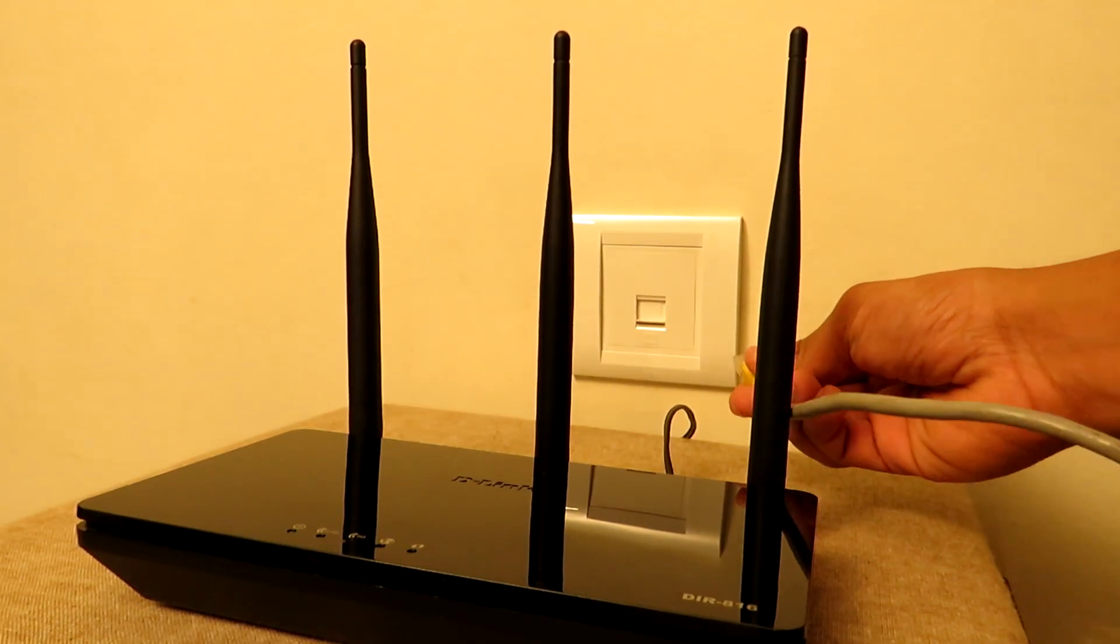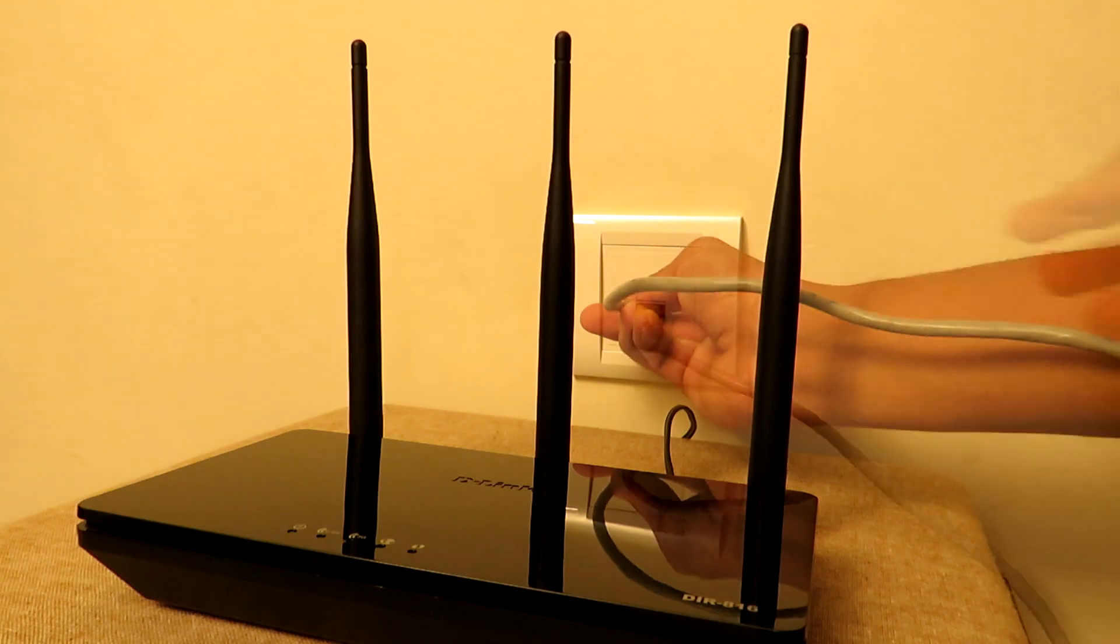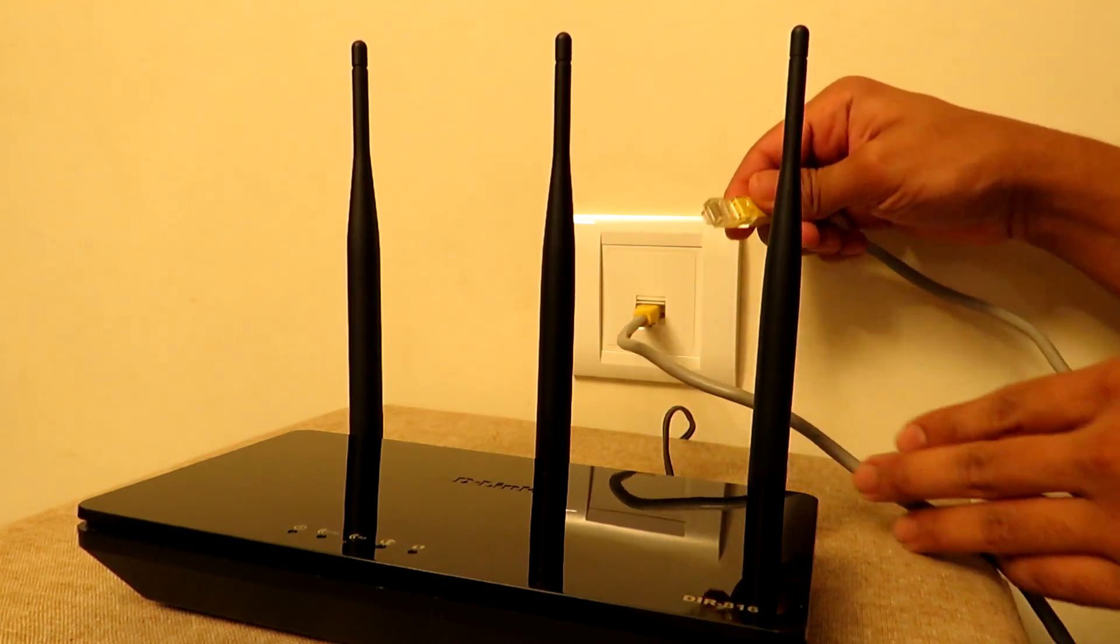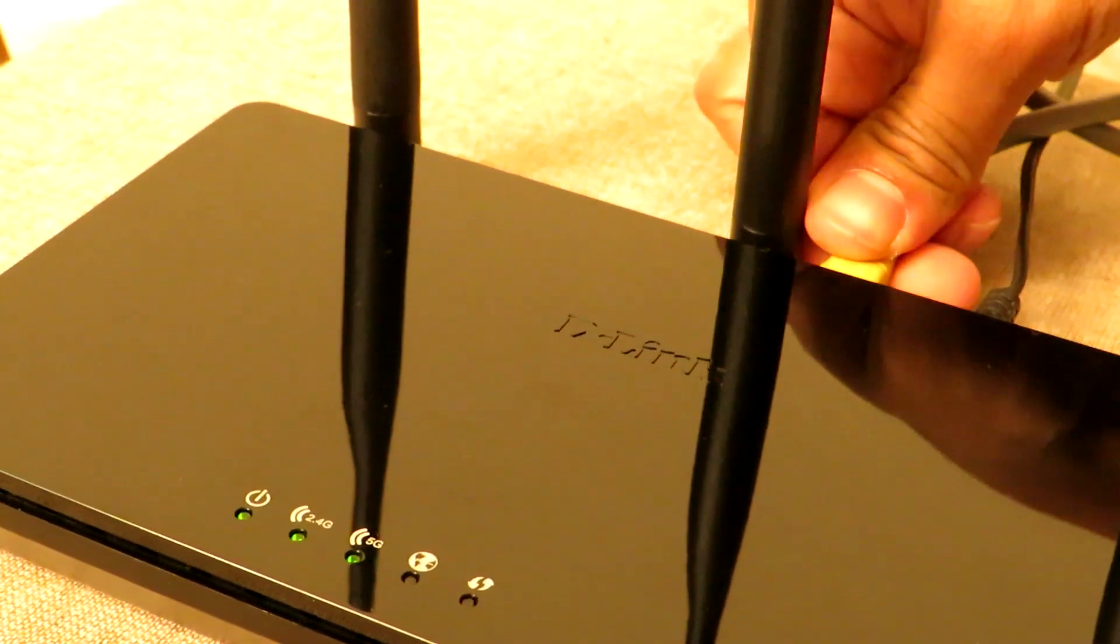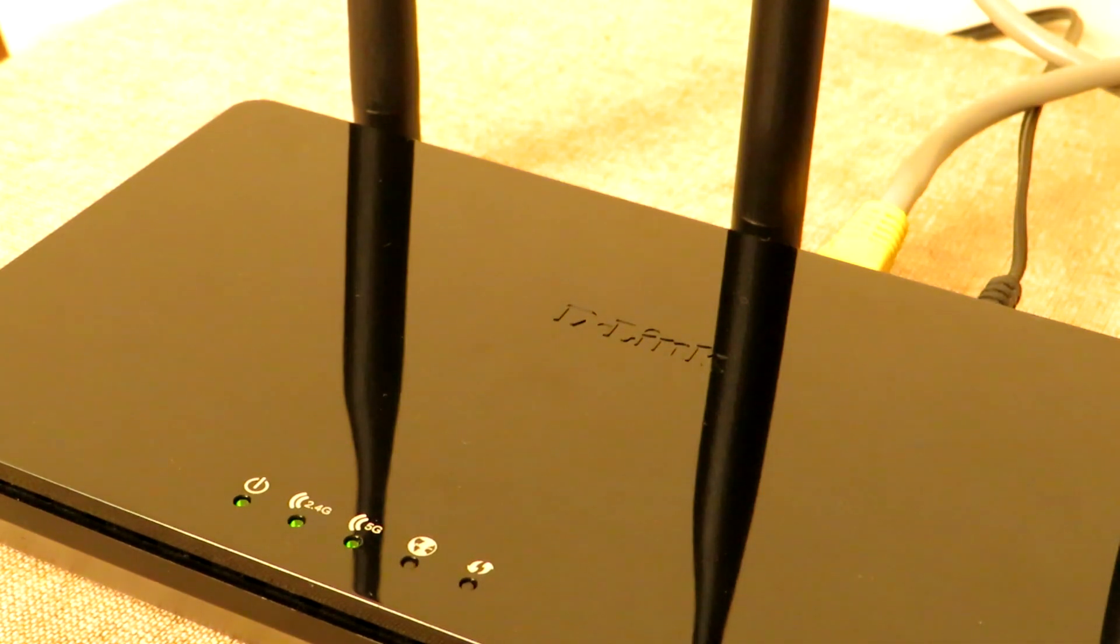In this way we have successfully connected our Roma RJ45 screw type wall socket. Let us commission this connection as well. Upon connecting, you can see that the internet light has started to glow, which means a successful link has been established between this router and the opposite line equipment.